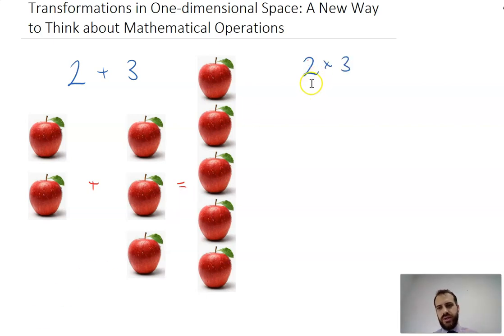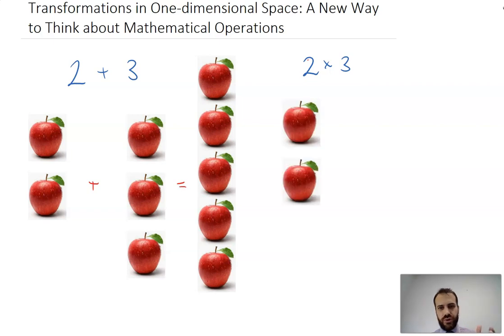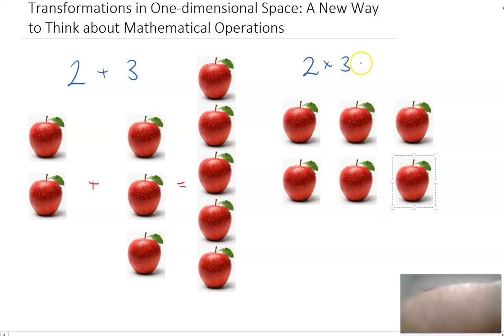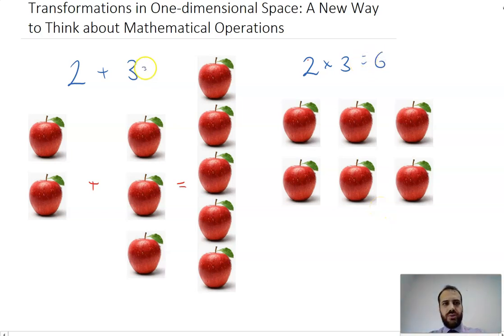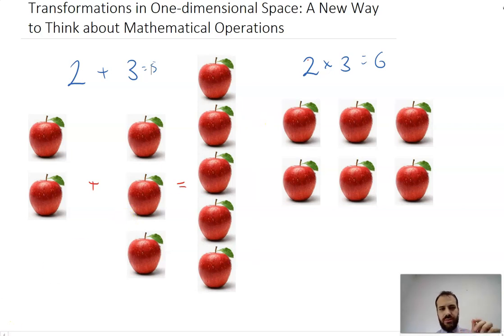Consider two times three. How might you explain that to a five-year-old? What you might do is say something like: I've got two rows of three apples, therefore I've got six apples. So we have these two nice neat little ways to think about mathematical operations, but we do not want to think about mathematical operations like that anymore.